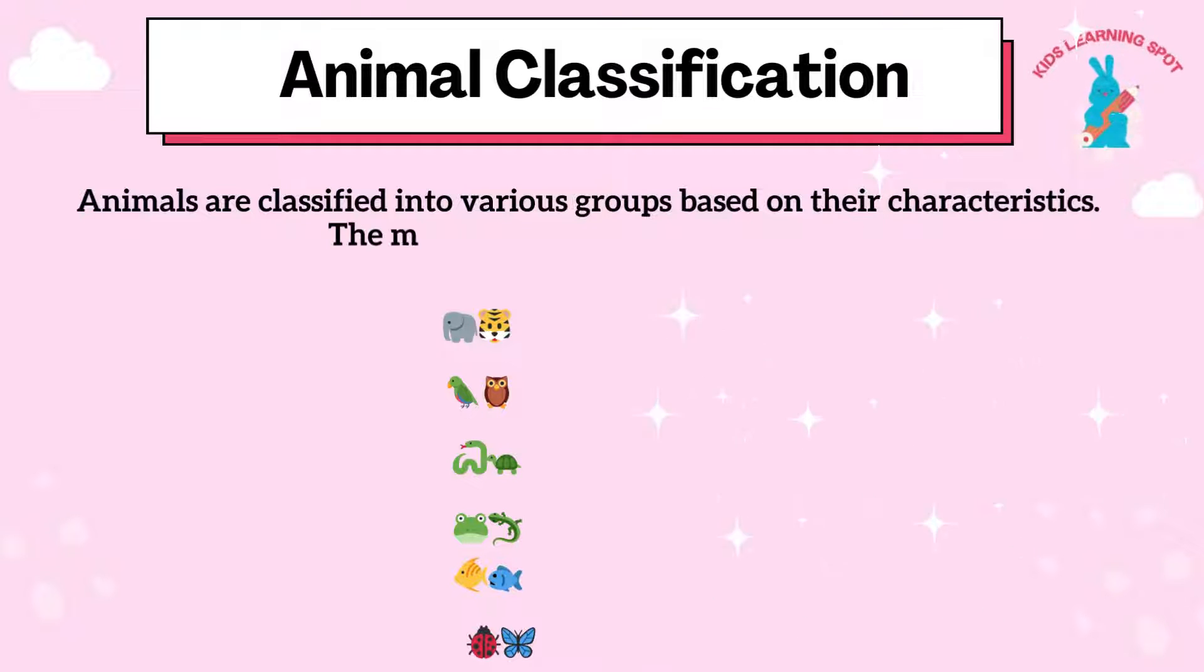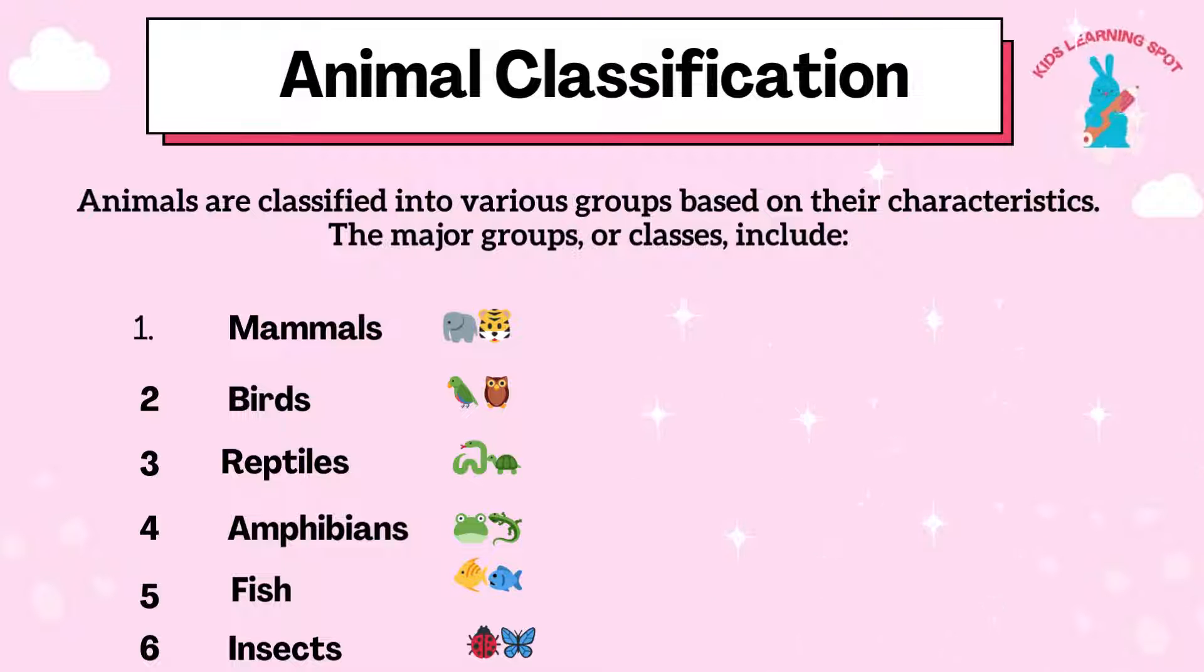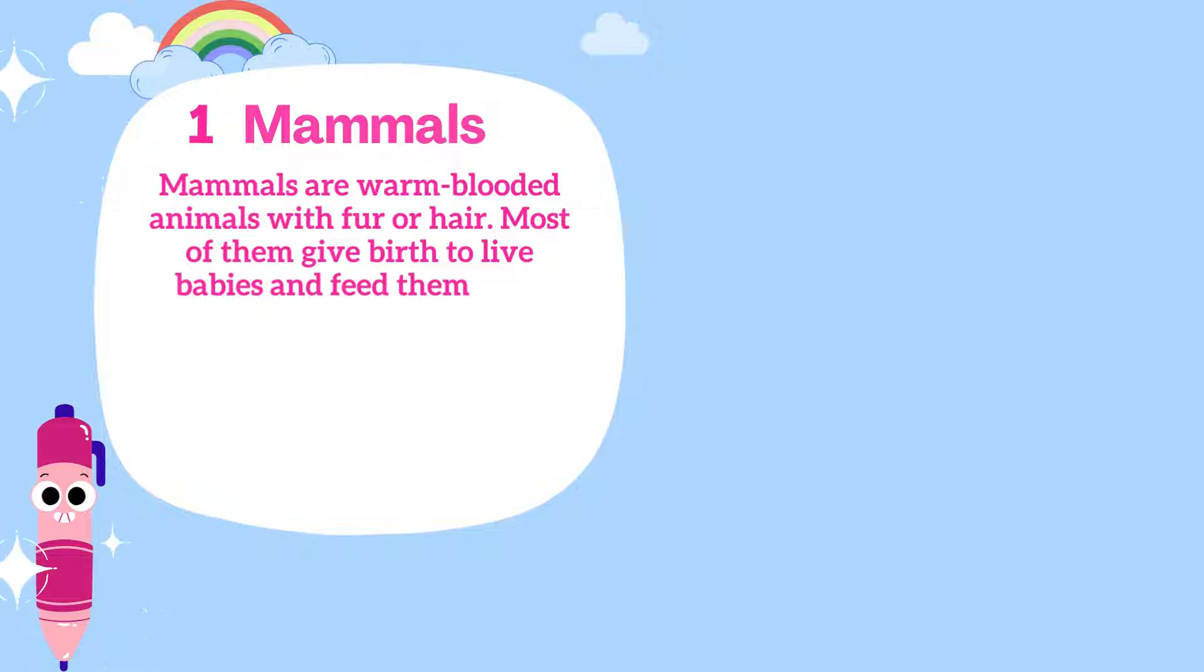The major groups or classes include mammals, birds, reptiles, amphibians, fish, and insects. Mammals are warm-blooded animals with fur or hair. Most of them give birth to live babies and feed them with milk.